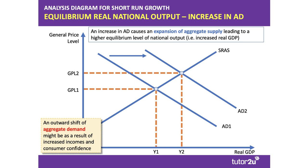One way of modelling this is to show an outward shift in aggregate demand from AD1 to AD2, causing an expansion of output. You move up the short-run aggregate supply curve, and there's a new level of national income of Y2 compared to Y1.